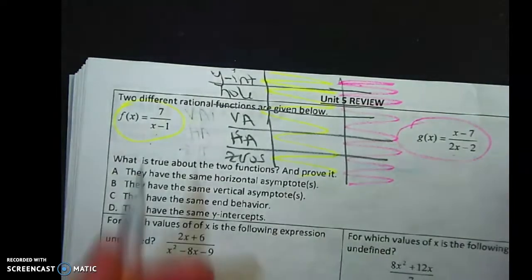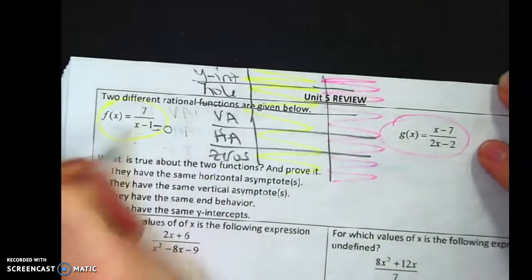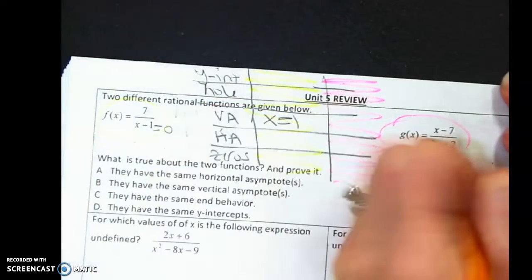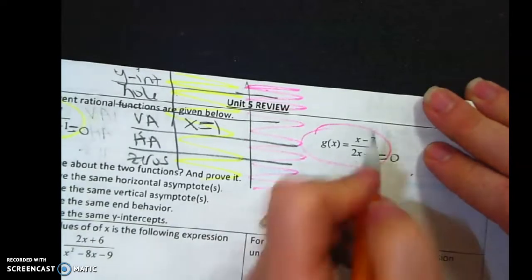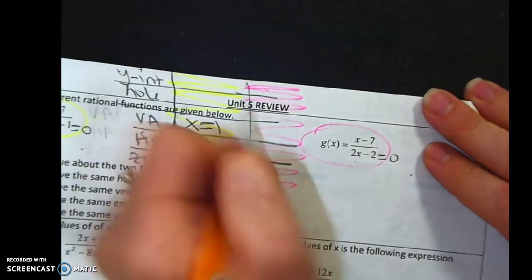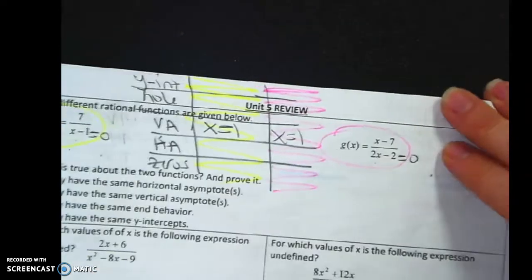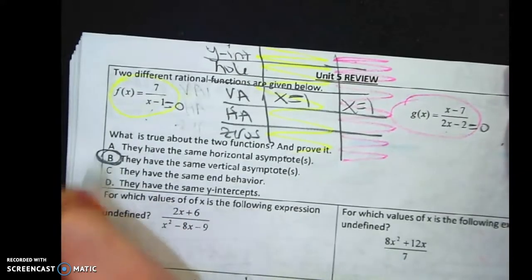Let's start with the VA. In order to get the VA, you set the denominator equal to zero, so this is x equals one. If I set this equal to zero, I can factor if I want, or I could just go straight. Add two, divide by two, x equals one, so they have the exact same vertical asymptote.